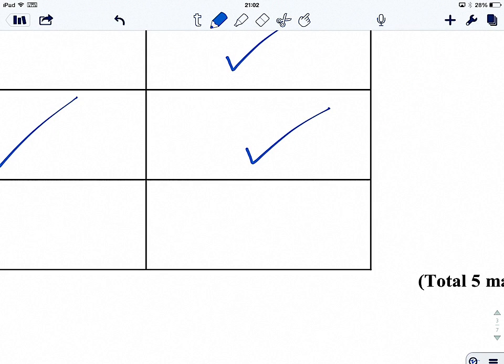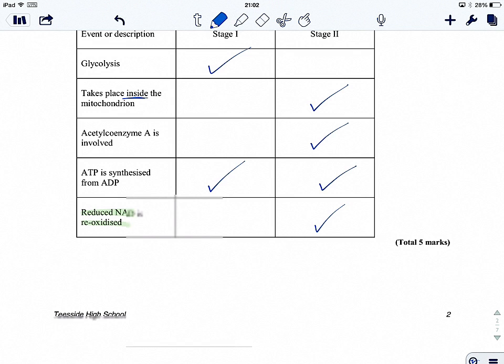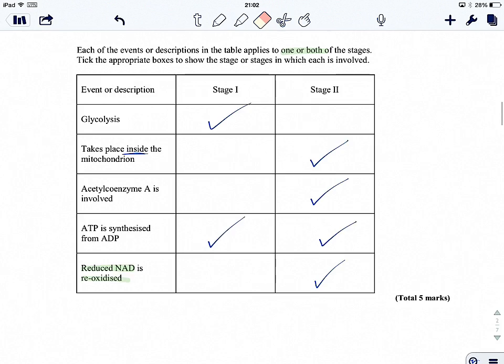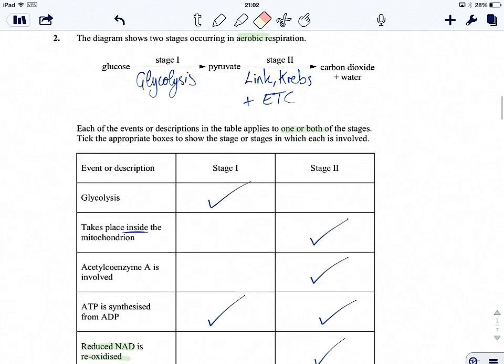So note that this question is worth five marks down here. So to get those five marks, you've got to get every single one of these correct. So one mark for each row. There we go. And that's it. That is the second question in my series of the fundamentals of respiration.